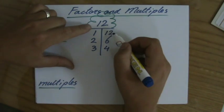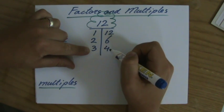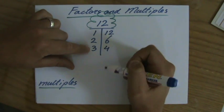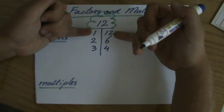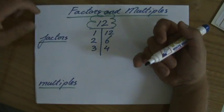And I always write them in factor pairs, because otherwise I tend to forget one or two. Some of you will forget that 1 is the factor and 12 is the factor. So writing them as factor pairs, I will never miss anyone out.